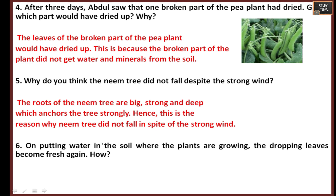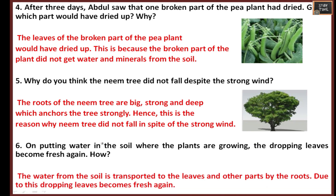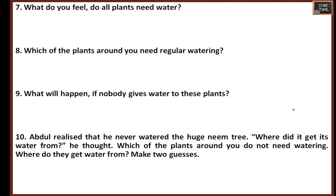On putting water in the soil where the plants are growing, the drooping leaves become fresh again. This is because the water from the soil is transported to the leaves and other parts by the roots. From the roots, the leaves get water, which causes drooping leaves to become fresh again.